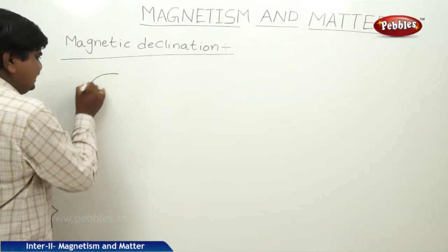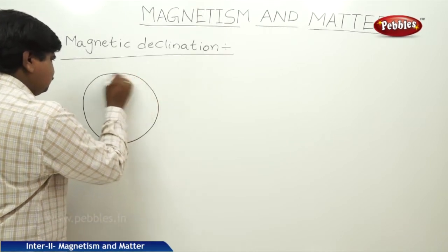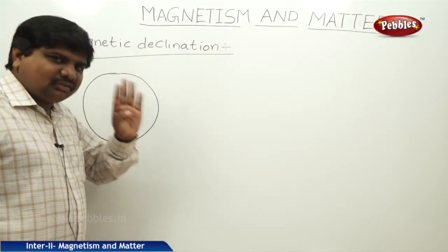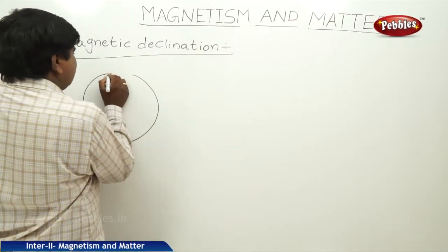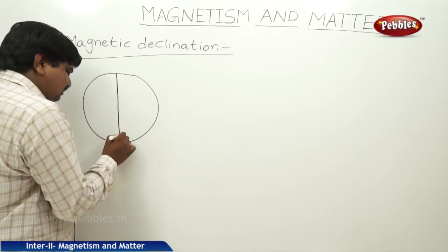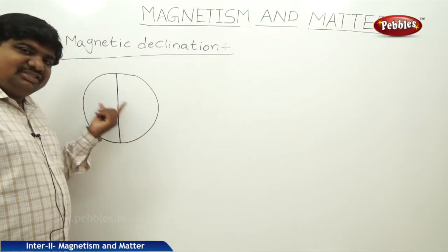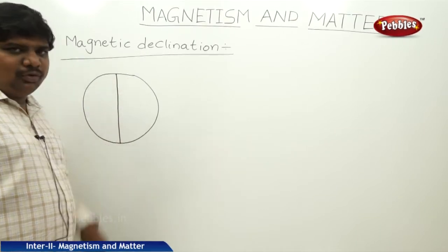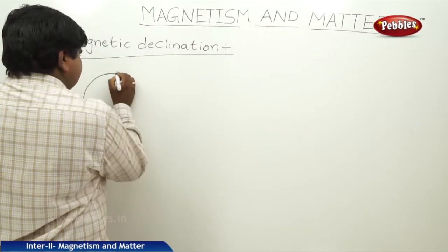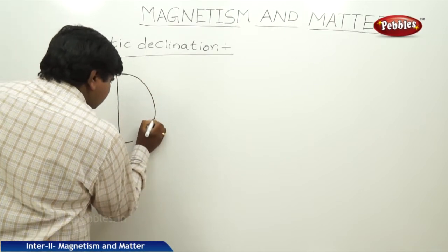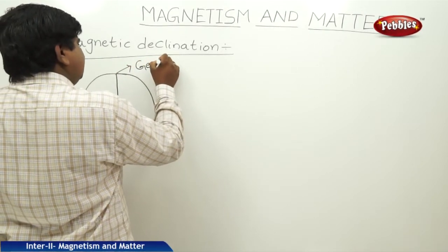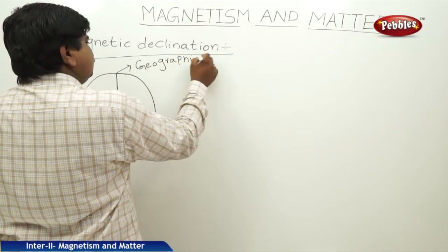We are assuming that earth is a spherical surface. It contains true geographical north and south, and magnetic north and south. The true geographical north and south is the line joining the north pole to the south pole. The line which joins the geographical north pole to the south pole is called the geographic meridian.